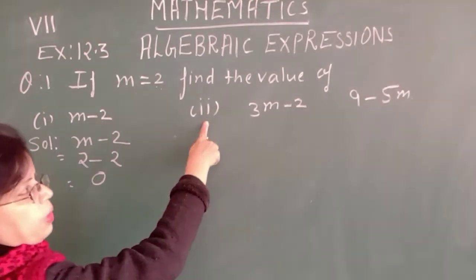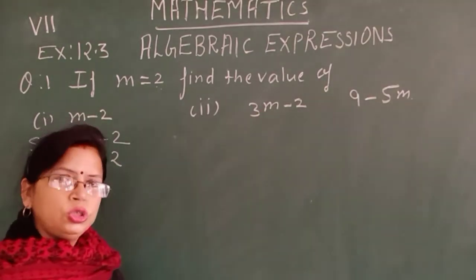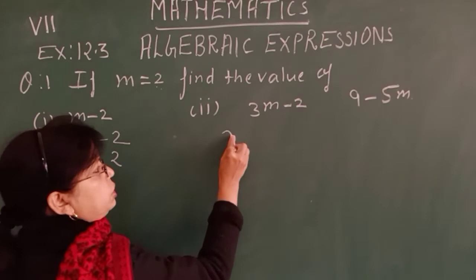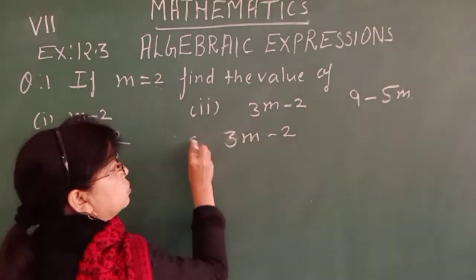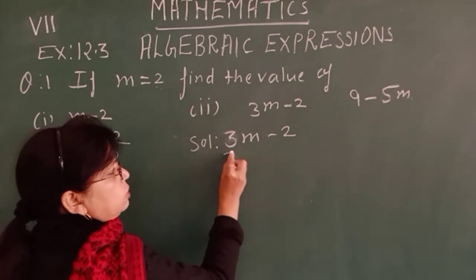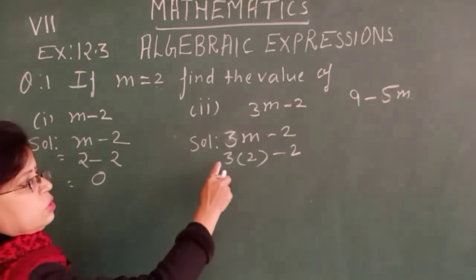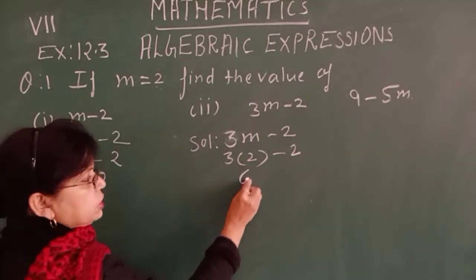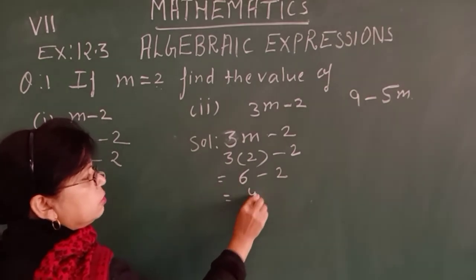Similarly, in second part, in place of m we will use 2. 3m minus 2, 3 multiply 2 minus 2. 3 multiply 2 is 6 minus 2, and final answer 4.